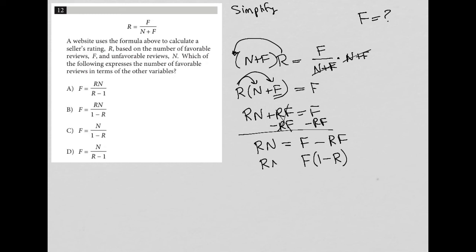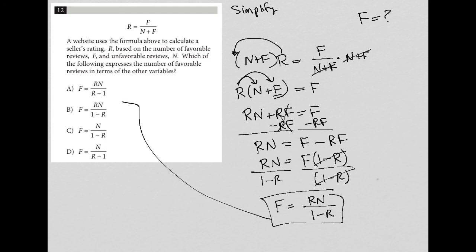And last but not least, I can divide both sides by one minus R in order to get F alone. So that's gone, that's gone. Leaving me with F equals RN divided by one minus R, which looks like answer choice B.